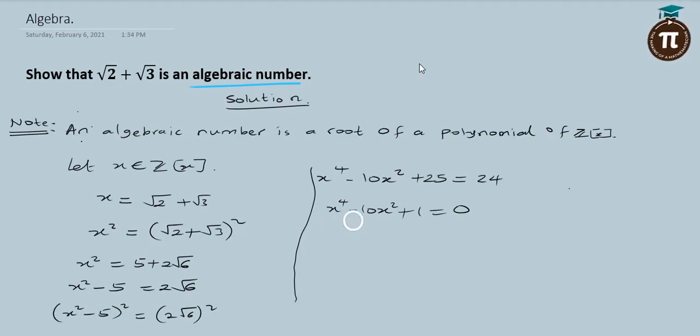And obviously if you look at the coefficient of this polynomial, they are all integers. The coefficient of x raised to power 4 is 1, this is minus 10, and this is plus 1. All of them are integers.